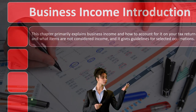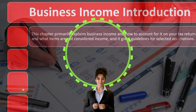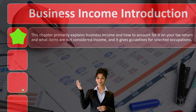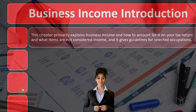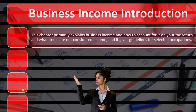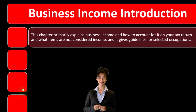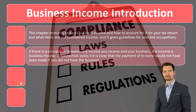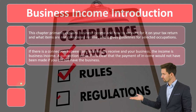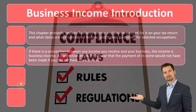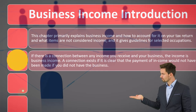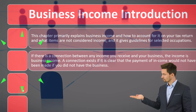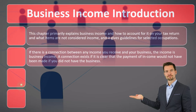This chapter primarily explains business income and how to account for it on your tax return, and what items are not considered income — that's just as important to know — and gives guidelines for selected occupations. Different occupations have their own needs and categorizations. If there is a connection between any income you receive and your business, the income is business income because you got it in connection to the business.